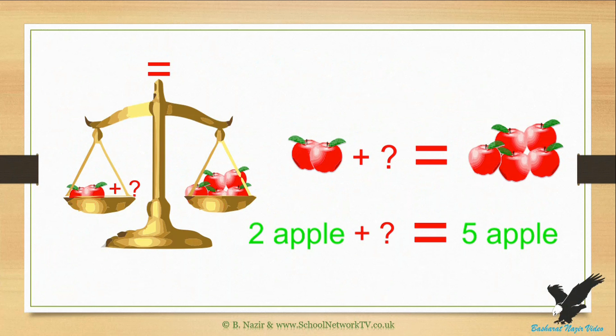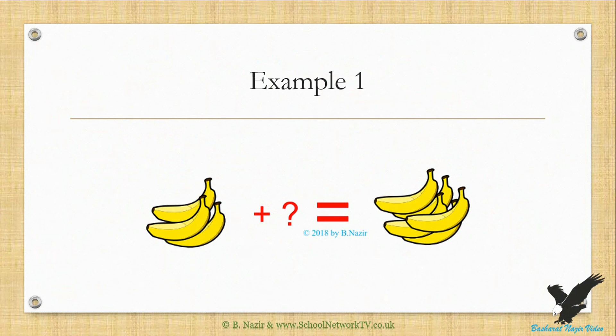So the answer to the equation mark is three. In this example we have bananas on either side of the equation. On the left side we have three bananas and on the right side we have five bananas, so there is no balance on both sides. To make both sides equal we need to add two bananas to the left side.